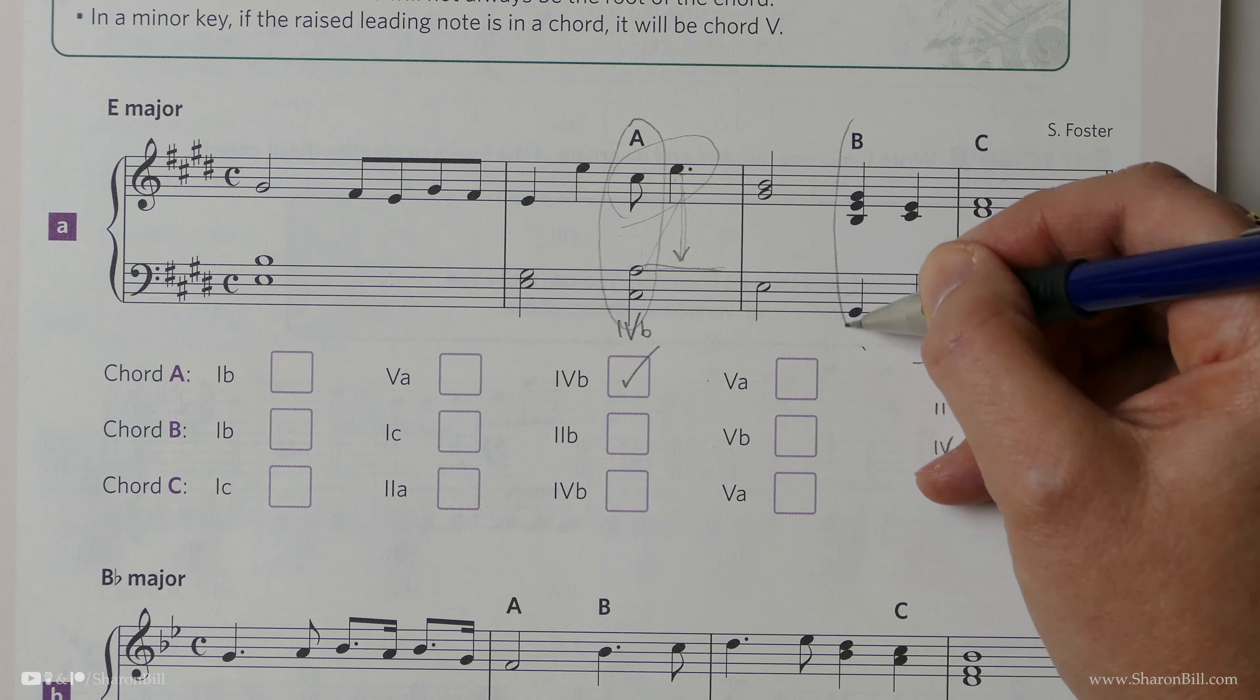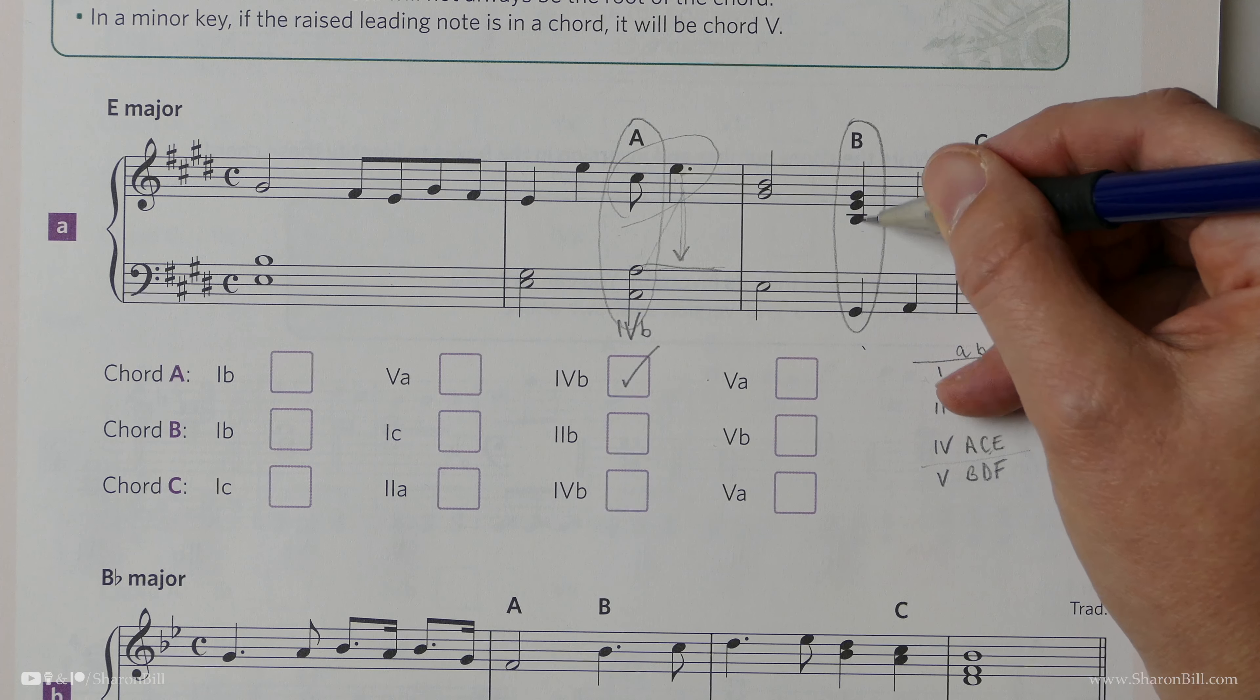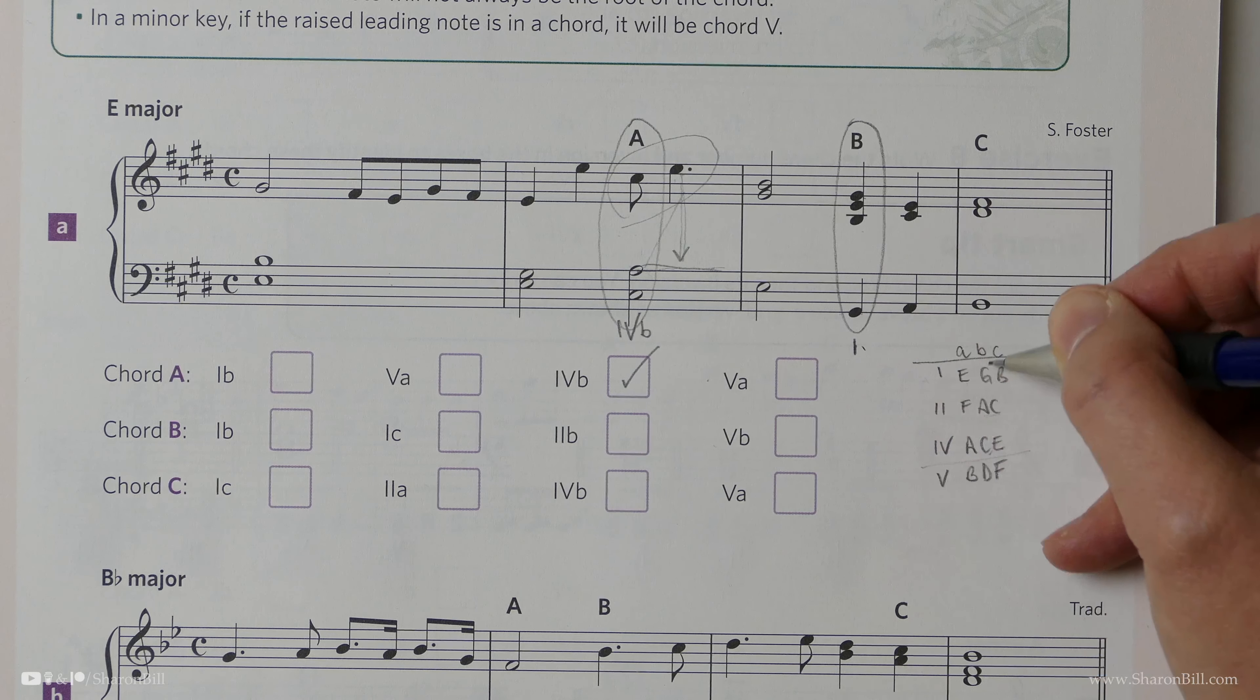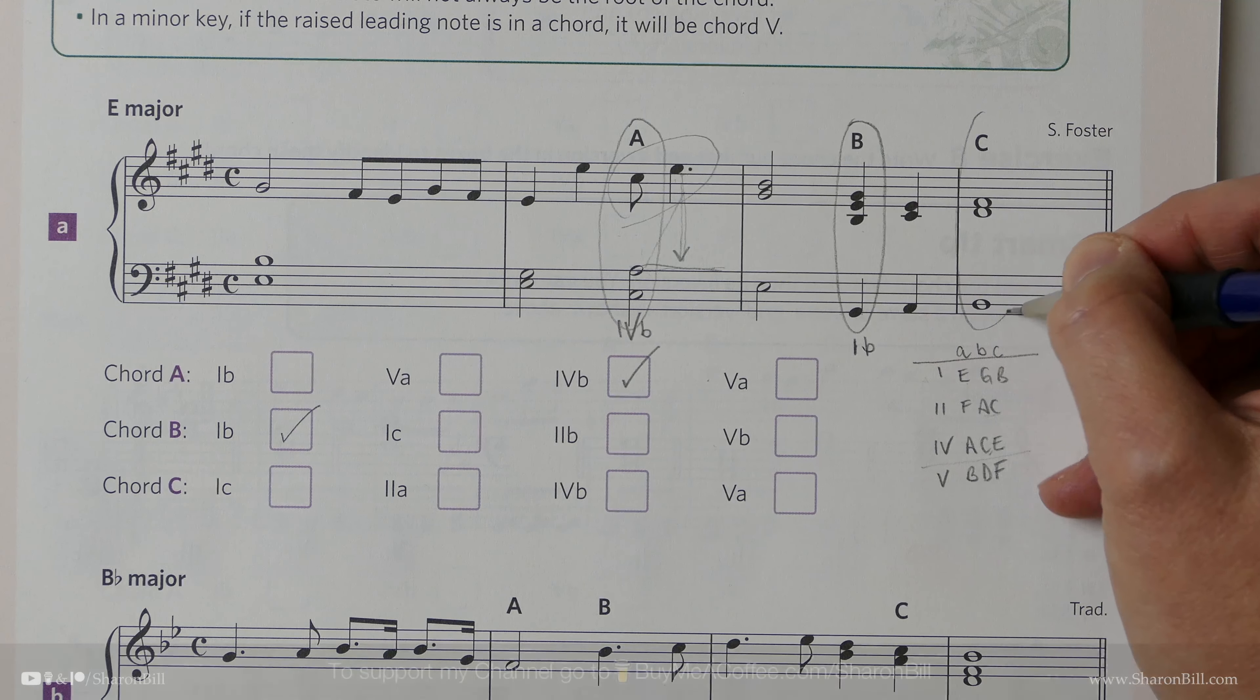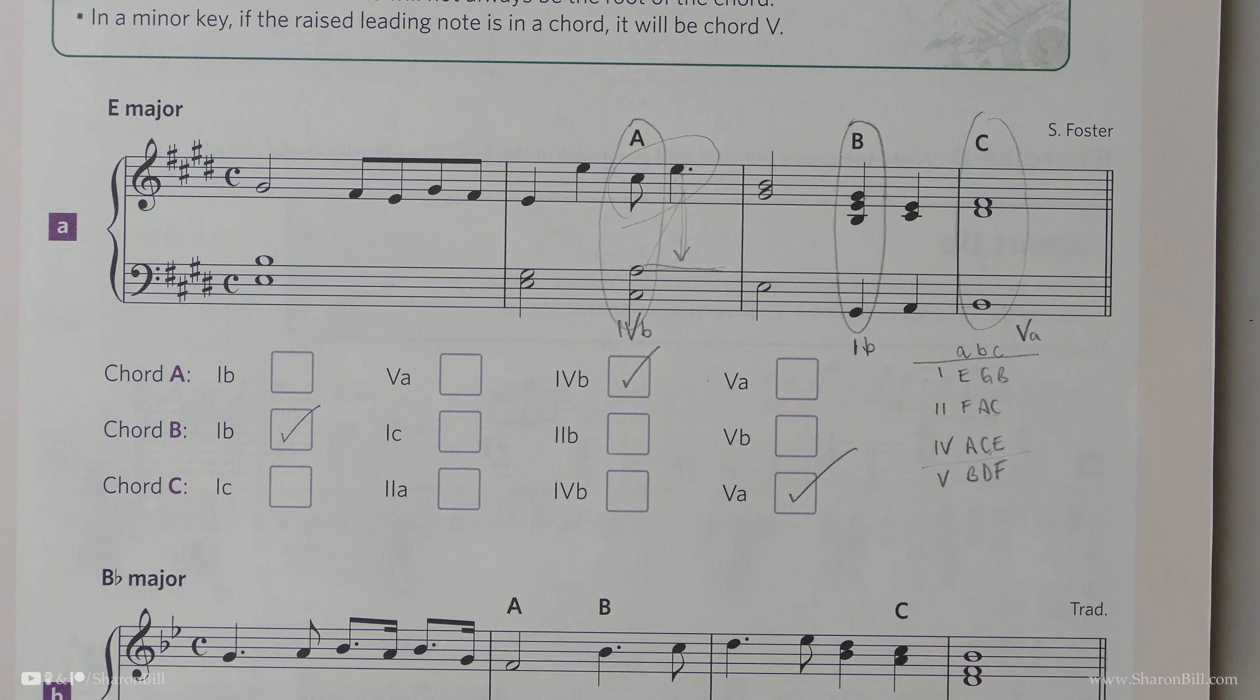Now we have chord B. Here we've just got all of these notes all together, there's nothing carrying over in the rhythm. We've got a G sharp, a B, E, G sharp - of course it's sharp. That's a chord I, and the root note is the G sharp, which is 1B. Then chord C - these notes here, we have a B, a D sharp, and an F sharp, which is chord V, and the B is in the bass, so it's a chord V A. That's that one completed. Let's press on.